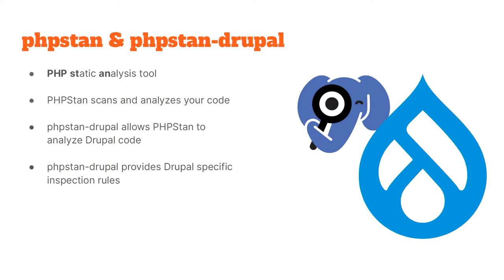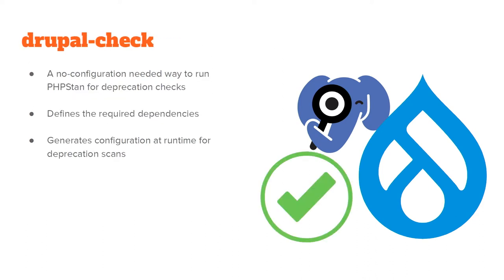Then there's Drupal Check, which people are probably more familiar with than PHPStan. Drupal Check was created for DrupalCon Seattle as a much easier way to configure PHPStan. It's basically install and run — no configuration required, it defines all the dependencies. When you run Drupal Check, it actually generates a configuration on the fly. It runs PHPStan without any static analysis except for deprecation rules — that's the one specific thing about it.